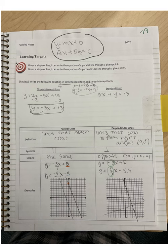So y equals mx plus b is slope-intercept form, and ax plus by equals c is standard form. And we took the equation y plus 2 equals negative 3 parentheses x minus 5, which is point-slope form, and we put it into slope-intercept form. We distributed the negative 3 to the x to get negative 3x. Negative 3 to the negative 5 gives us positive 15. And then we subtracted 2 from both sides, and we got y equals negative 3x plus 13.